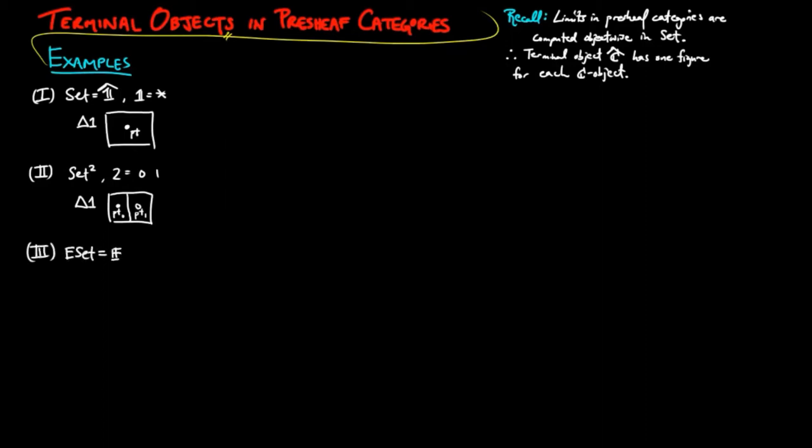In evolving sets, the terminal object is a singleton set equipped with the identity process. In other words, sigma acts as the identity.